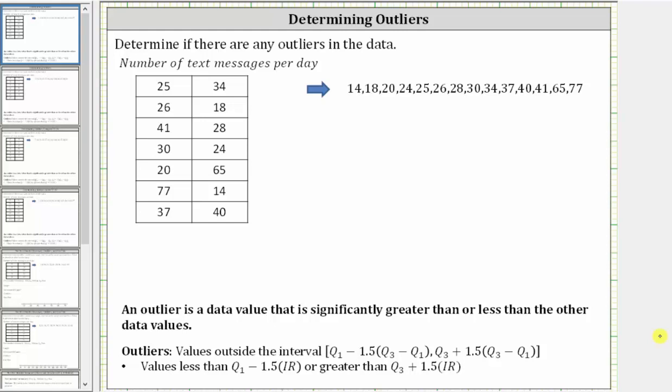This video will show how to determine whether a set of data has any outliers. An outlier is a data value that is significantly greater than or less than the other data values.